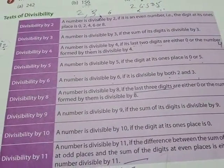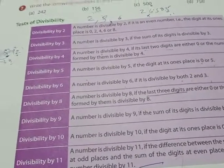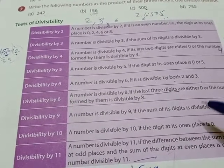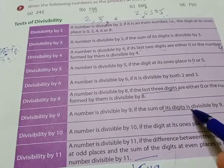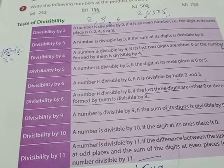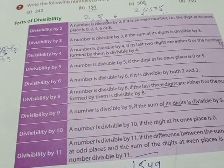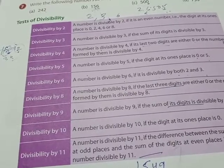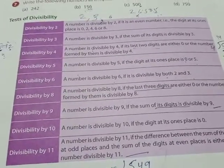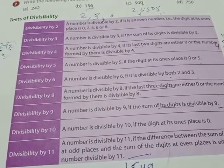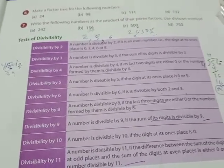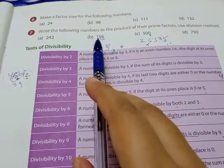The rule for 9 is the same as the rule for 3. Just as we add the digits for 3, we also add the digits of the number for 9. After adding the digits, the answer we get should be coming in the table of 9. If the sum of digits falls in the table of 9, then the number is divisible by 9. For example, take 156.